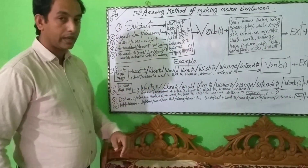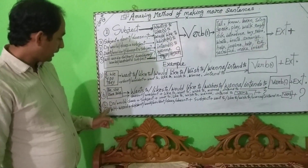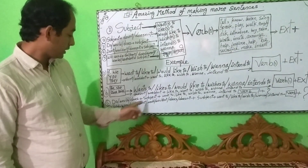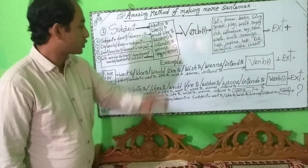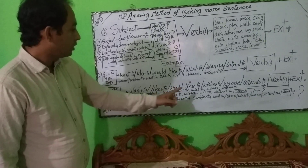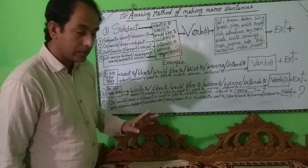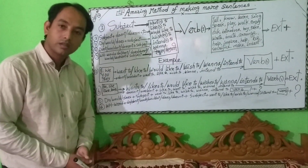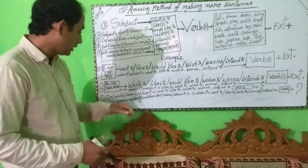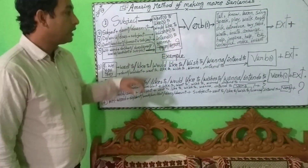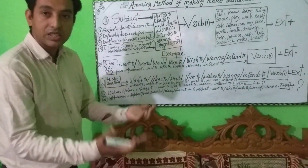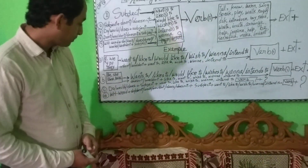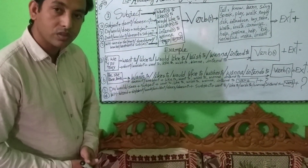For interrogative sentences, use 'do' or 'does' according to the number and person of the subject: Do you want to tell a story? Do you like to learn English? Do you like to sing a song? Would you like to sing a song? Would you like to tell a story? Then for third person singular: Does she like to tell a story? Does she like to learn English? Does she like to sing a song? Does Vina like to sing a song? Does Sufyan like to sing a song?